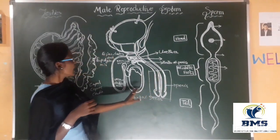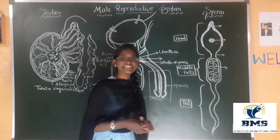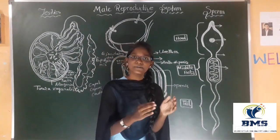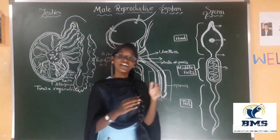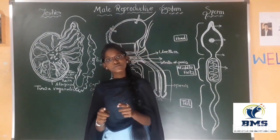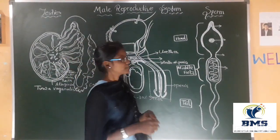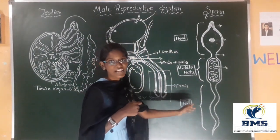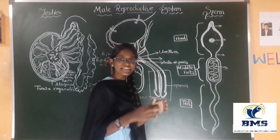I hope you understood about this male reproductive system. But it is also very important to know about the structure of the sperm and the pathway of the sperm. These are all the things you need to know about the male reproductive system. Now I am going to tell about the structure of the sperm. This sperm has mainly three parts.